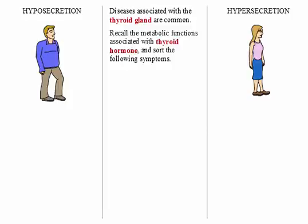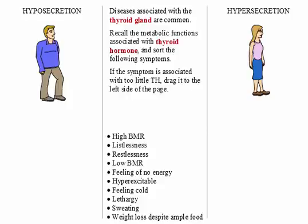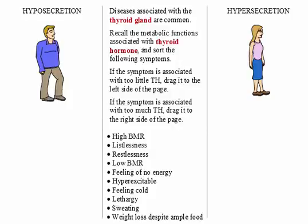Recall the metabolic functions associated with thyroid hormone and use that knowledge to sort the following symptoms. If the symptom is associated with too little TH, drag it to the left side of the page. If the symptom is associated with too much TH, drag it to the right side of the page.